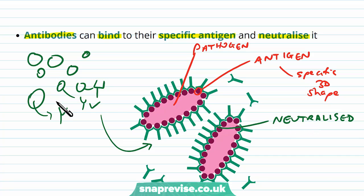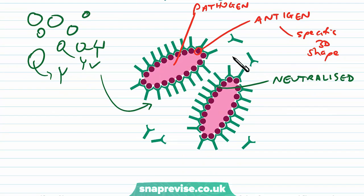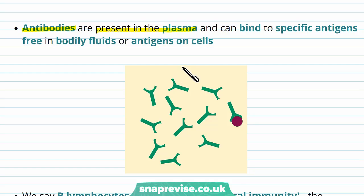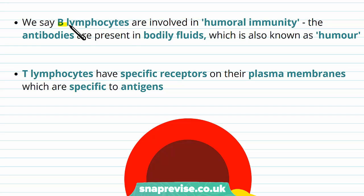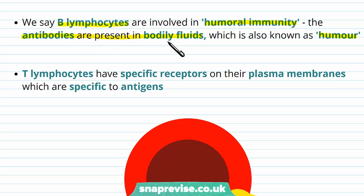It's somewhat a game of luck as to which lymphocyte has the right shaped antibodies. The antibodies sent out from B cells are present in the plasma of the blood, and they can bind to specific antigens free in the bodily fluids, or to antigens on cells — for example, toxins or parts of virus particles, or those bound to cells as seen in the previous diagram. In this respect, we say that B lymphocytes are involved in humoral immunity. The antibodies are present in bodily fluids — traditionally called humors, such as blood and saliva — so humoral immunity refers to immunity found in the bodily fluids.